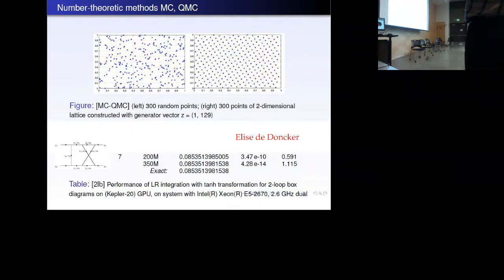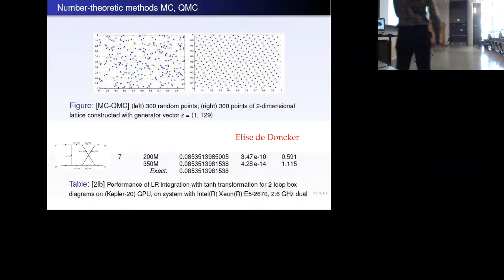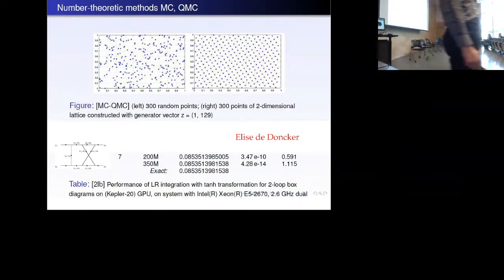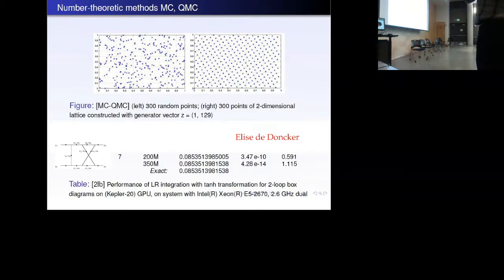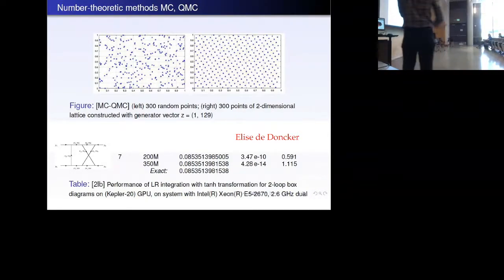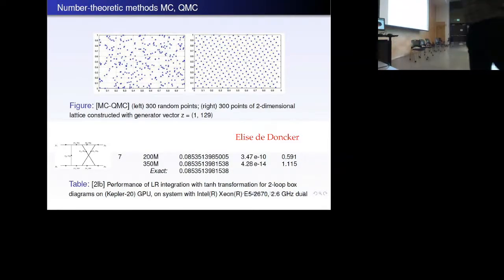Here's an example for a certain loop integral that was computed directly, just directly computing the integral over the Feynman parameters with some hundred million points. Within a time of seconds, she was able to obtain a precision of 14 digits, which I think is quite impressive. This was on a GPU, but nevertheless, this is impressive.